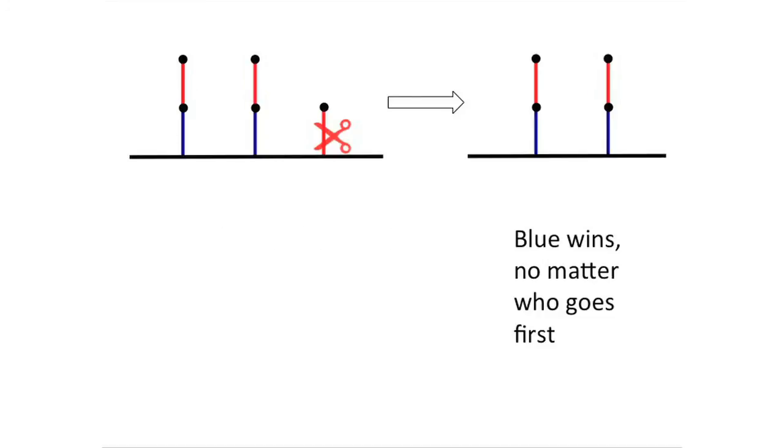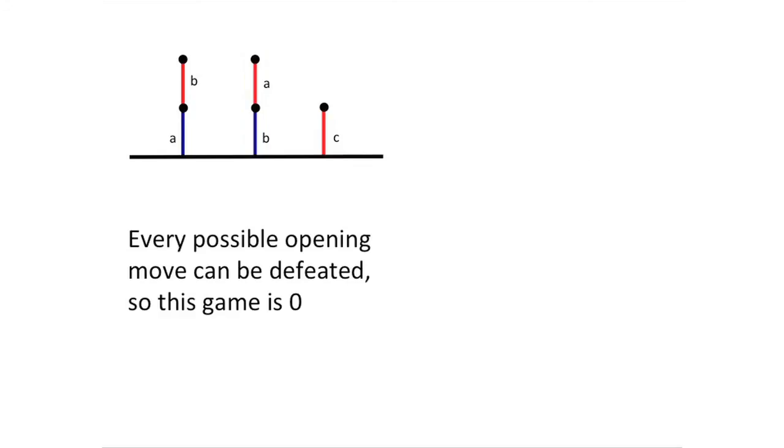Finally, if red opens by taking his only branch which touches the ground, his remaining position is soon seen to be hopeless. So every possible opening move can be defeated. Either player going second can win. So the value of this game is zero.